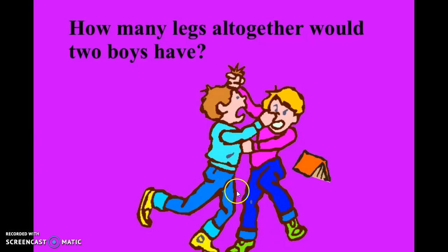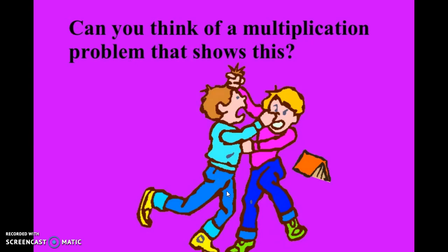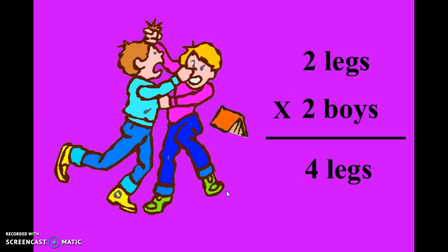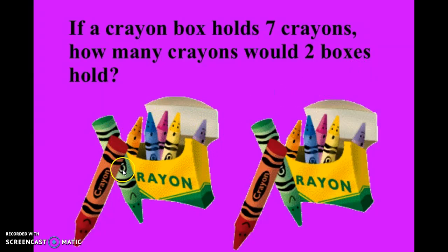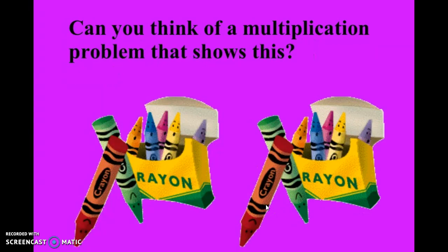How many legs altogether would two boys have? So now we have two boys, two legs each. Can you think of a multiplication problem that could show this? Two legs times two boys — you end up with four legs total. If a crayon box holds seven crayons, how many crayons would two boxes hold?